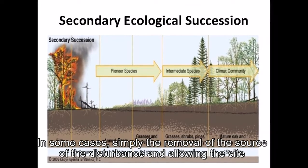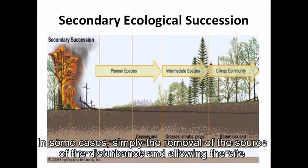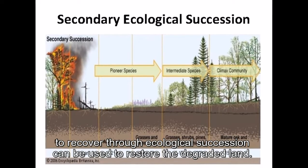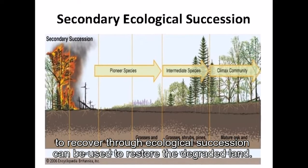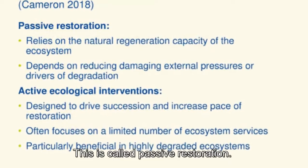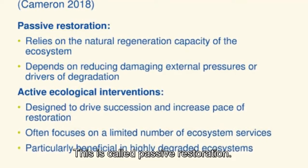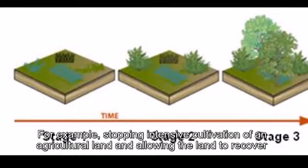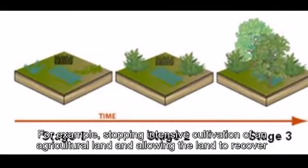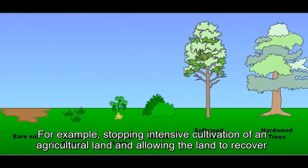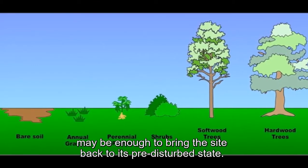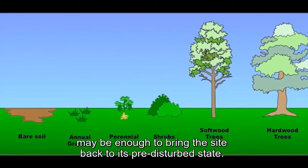In some cases, simply the removal of the source of the disturbance and allowing the site to recover through ecological succession can be used to restore the degraded land. This is called passive restoration. For example, stopping the intensive cultivation of an agricultural land and allowing the land to recover may be enough to bring a site back to its pre-disturbed state.